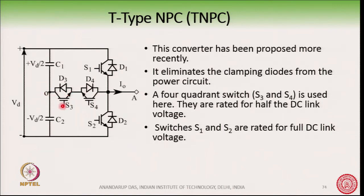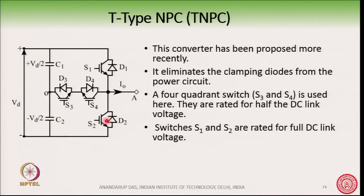If S3 and D4 are conducting, the current will flow one way; if S4 and D3 are conducting, current will flow the other way — so this is a bidirectional current switch that can also block bidirectional voltage. If I turn on S1, the plus voltage will come here; if I turn on S2, the minus voltage will come here. Therefore, the inner switch is a 4-quadrant switch rated for half the DC link voltage, but switches S1 and S2 are rated for the full DC link voltage.